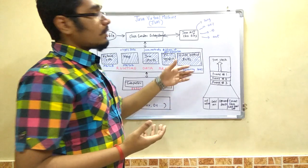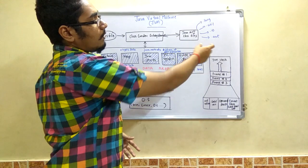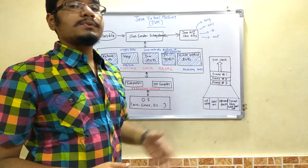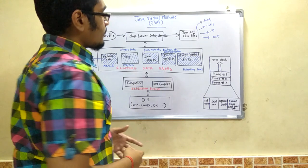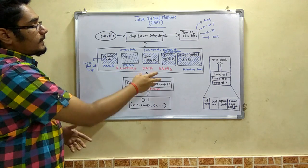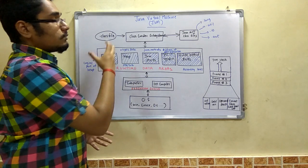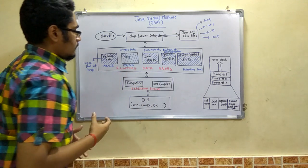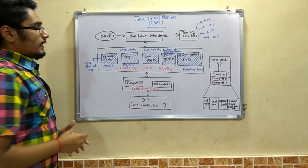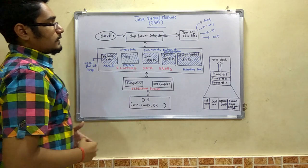Now this API level, that is the application programming interfaces, could be .lang or .util or io or the awt, that is the abstract windowing toolkit. Now moving to the runtime data areas, this class loader subsystem is divided into 5 main sections: the method area, the heap, java stacks, pc registers that is the program counter, and the native method stacks.